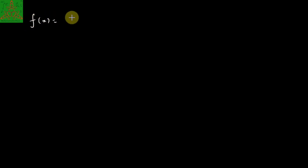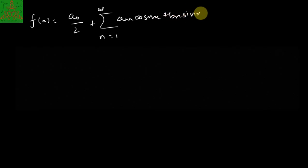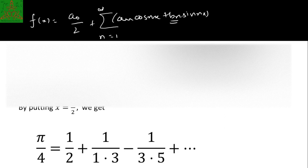Finally we have the Fourier series: f(x) = a₀/2 plus summation of aₙ·cos(nx) plus bₙ·sin(nx). We concluded that bₙ = 0. So that is the Fourier series of x·sin(x). That's it for this video. If you like this video please press the like button. If you have any comment, suggestion or question, please drop it in the comment box below. See you in the next video. Bye bye.